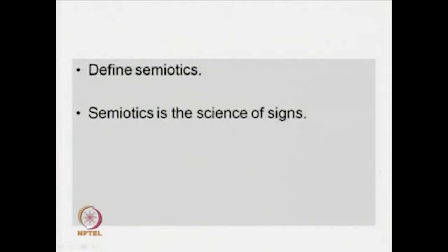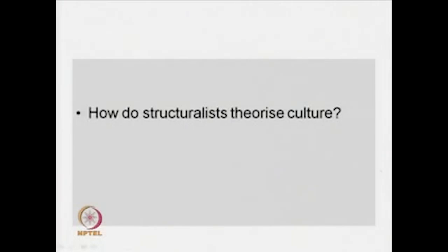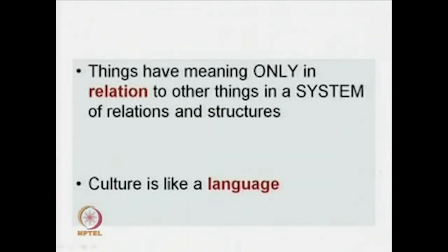How according to structuralists do we construct meaning? Meaning according to structuralism is constructed through the creation and interpretation of signs. How do structuralists theorize culture? Structuralists say that like language, culture is a similar system — in fact, culture can be read in terms of a language and the theory of structuralist linguistics as given to us by Saussure and others — and that cultural objects, forms, phenomena have meaning only in relation to other things in a system of relations and structures, particularly by differentiation and by binary opposites.